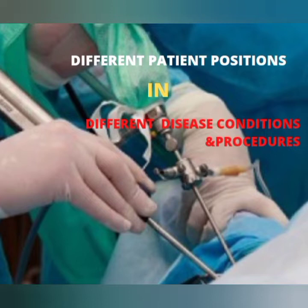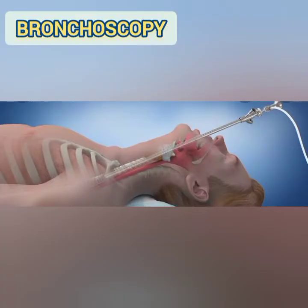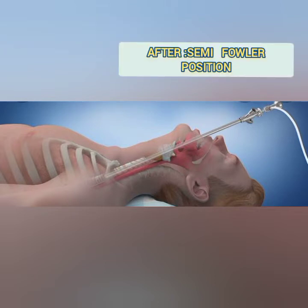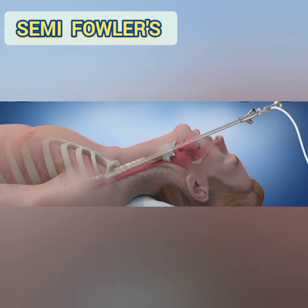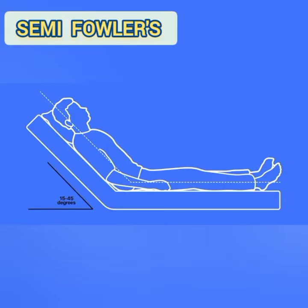The first procedure is bronchoscopy. After doing the procedure, we will provide the semi-Fowler's position to the patient. It will reduce aspiration risk from difficulty of swallowing. The semi-Fowler's position is shown in this diagram — a 15 to 45 degree angle is preferred.